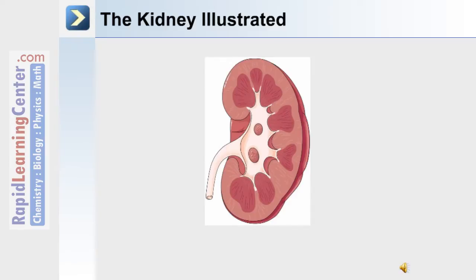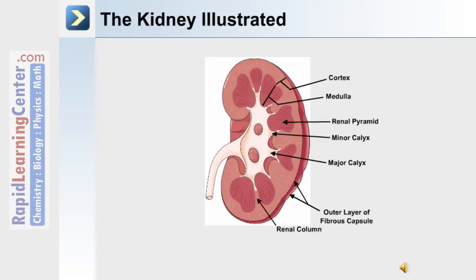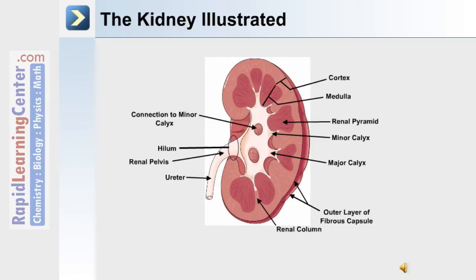Let's use this slide to describe the sectional anatomy of the kidney. Surrounding the outside of the kidney is an outer layer of fibrous capsule. The outermost layer is the cortex and the inner layer is the medulla. Within the medulla are renal pyramids. There are also minor and major calyx. Between the renal pyramids is the renal column. The hilum of the kidney is the location of the renal pelvis and the exit for the ureter.